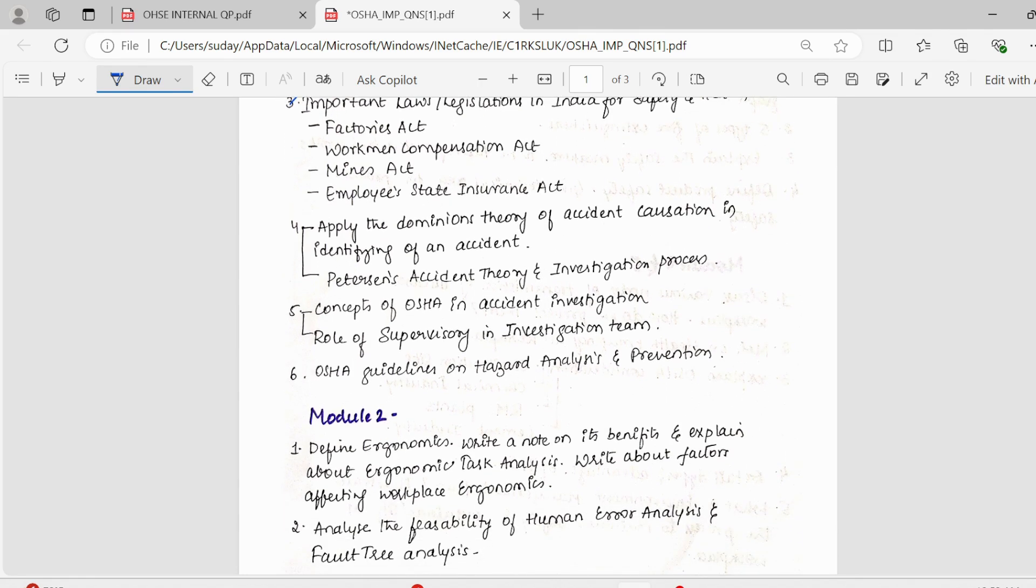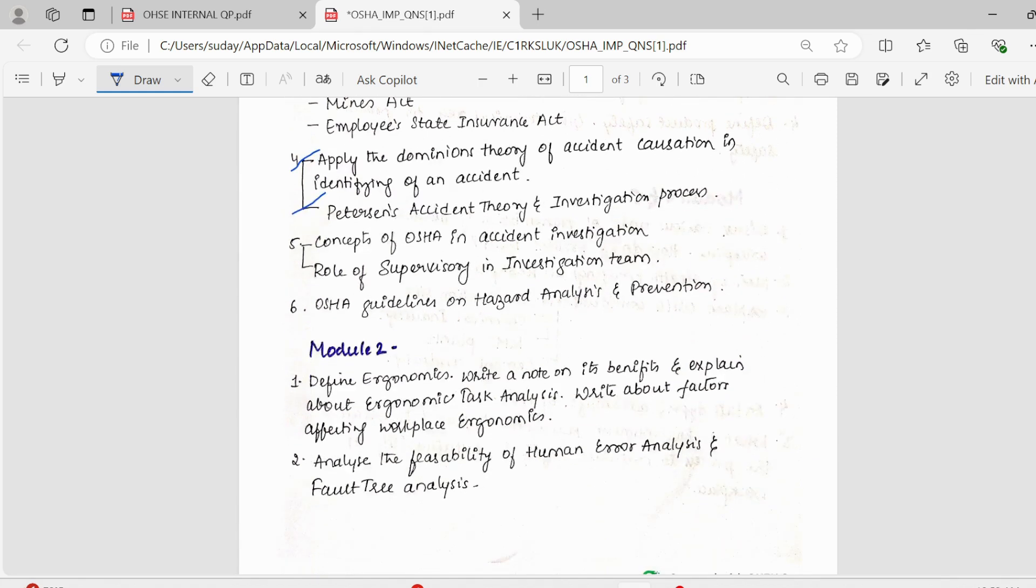Next, we have apply the Domino's theory of accident causation in identifying an accident. Either this could be asked or the Peterson's accident theory could be asked. These two are again important questions. Next, we have concepts of OSHA and accident investigation, the three to four step process. Then, what is the role of supervisor in the investigation team? Again, this is also an important topic. Then, what are the OSHA guidelines on hazard analysis and prevention? You can write it in general also.